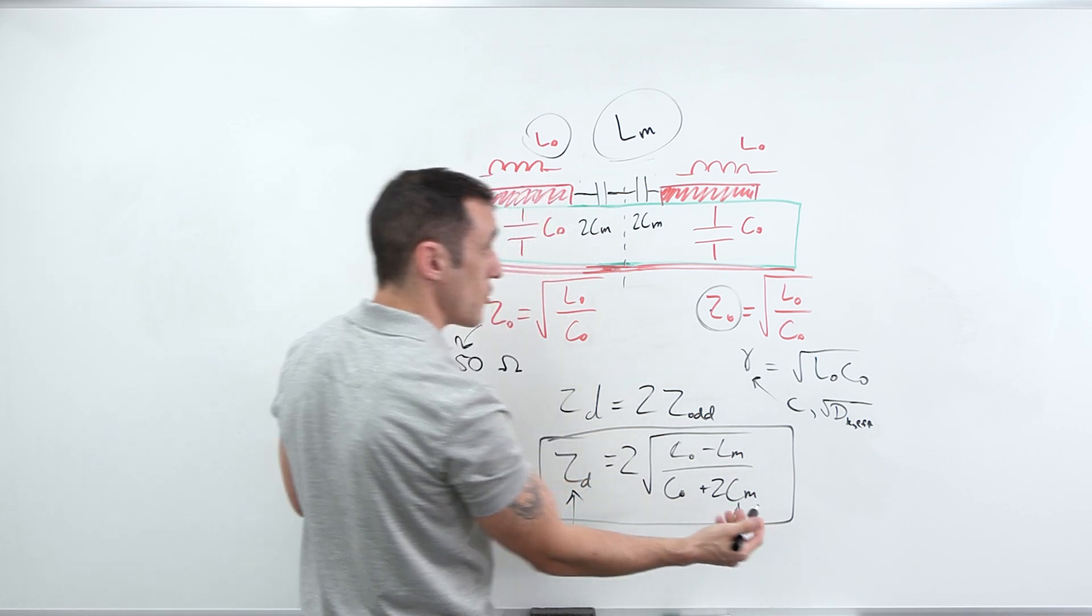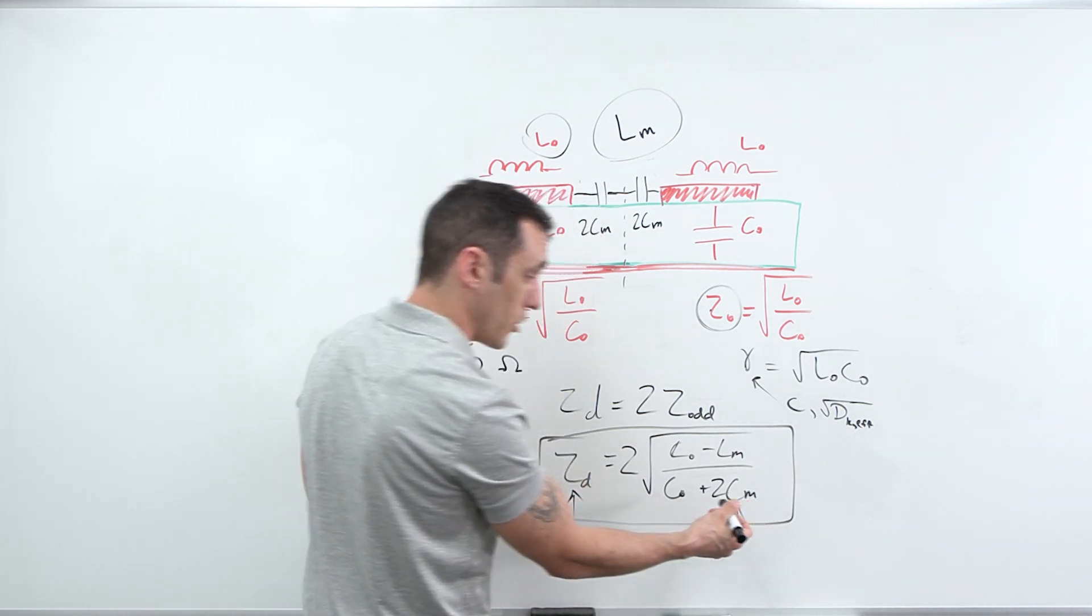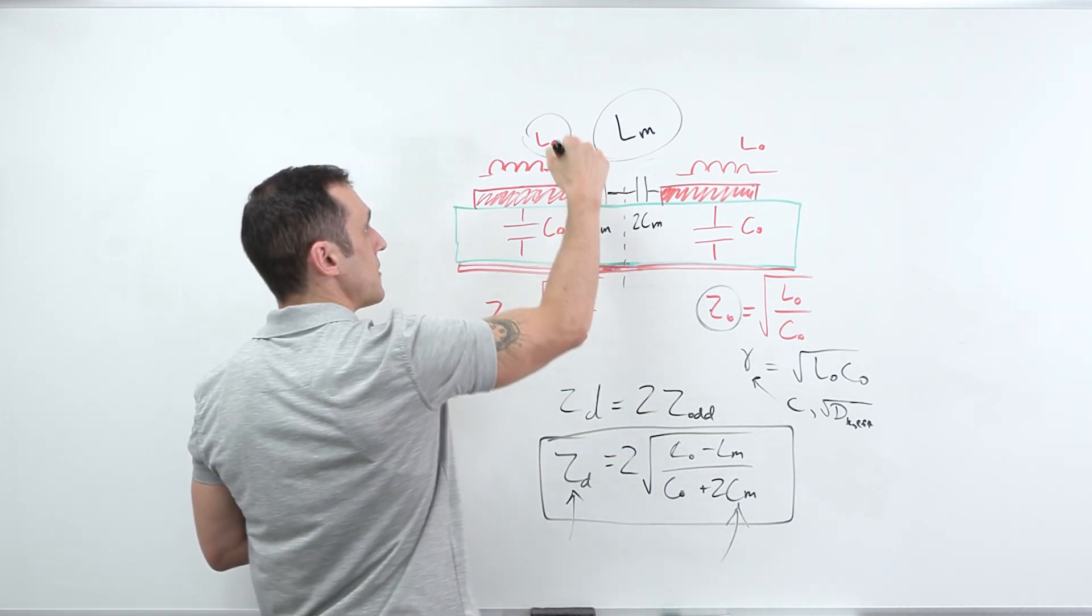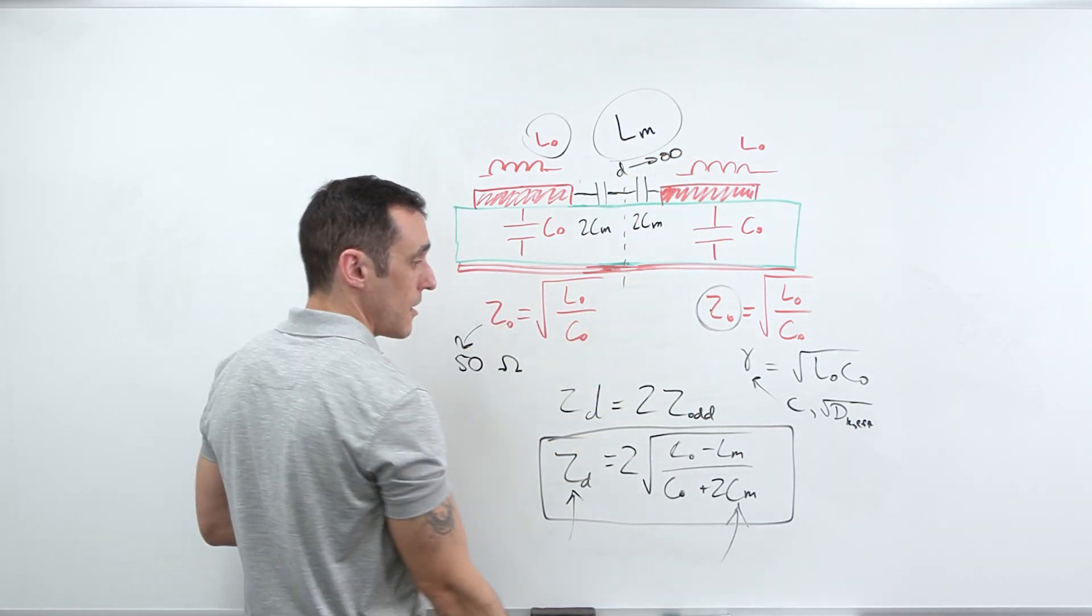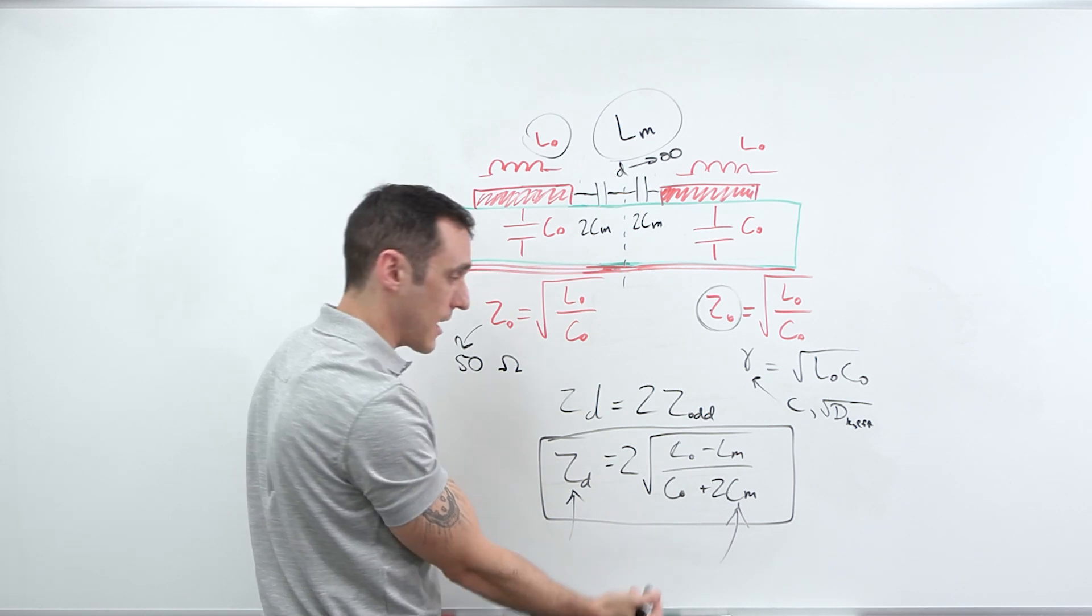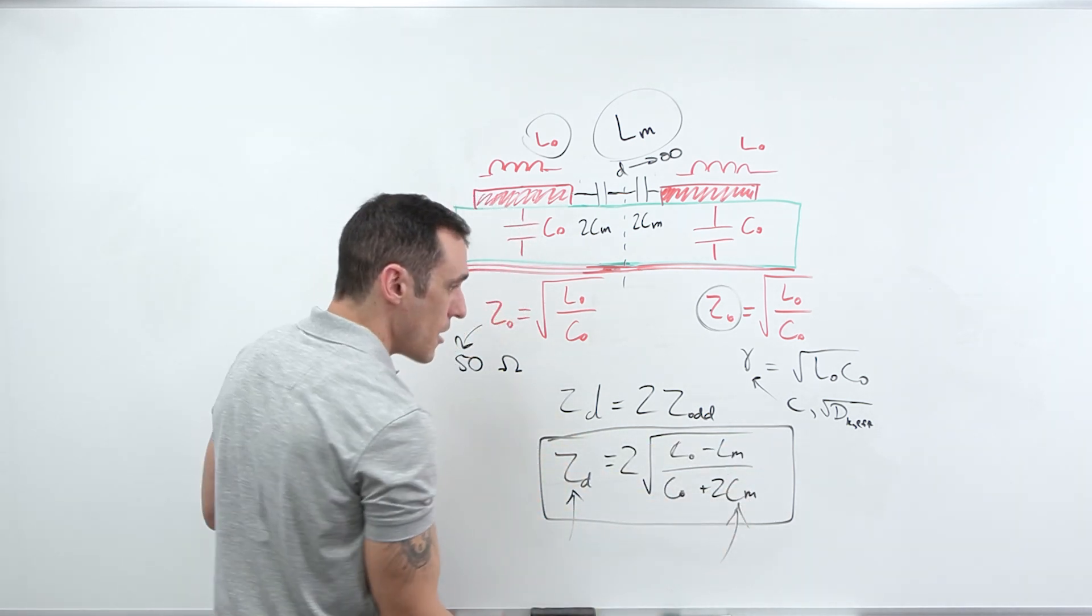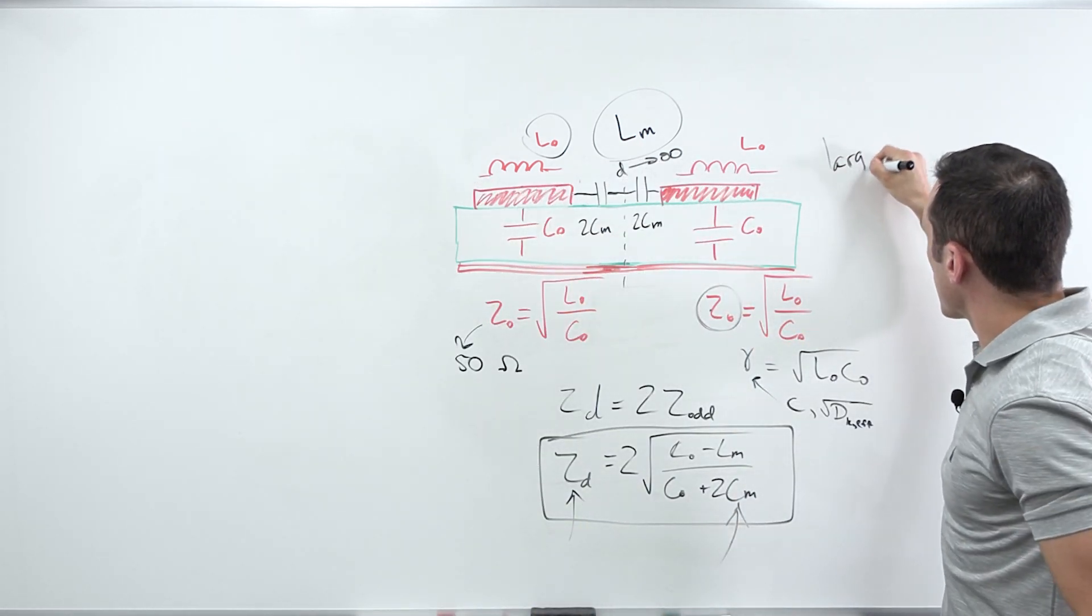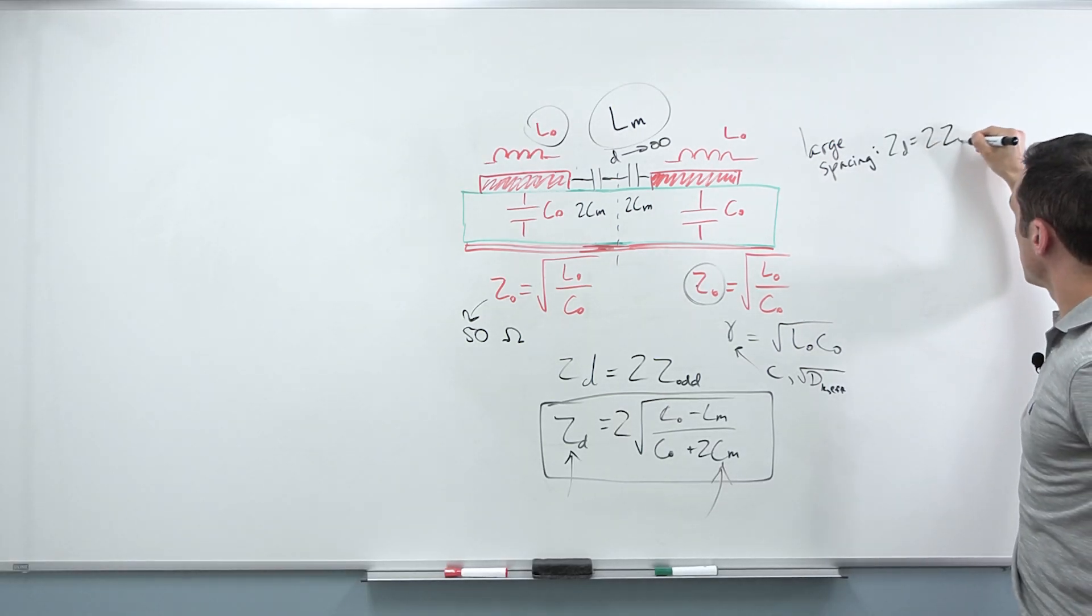So we have smaller mutual capacitance. And so if I take this distance here, D and it goes off to infinity, eventually this L sub M is going to cancel out or is going to go to zero. And this C sub M is going to go to zero. So we have a nice result here with a large spacing. Z sub D is just equal to two Z sub zero.